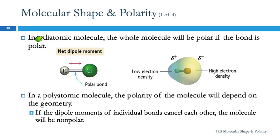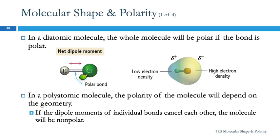If we're thinking about a diatomic molecule where there are only two atoms, there's only one bond, and if that bond is polar then the molecule is polar. Here we have hydrogen and chlorine — two different nonmetals — so I would expect you to tell me that this is a polar bond.